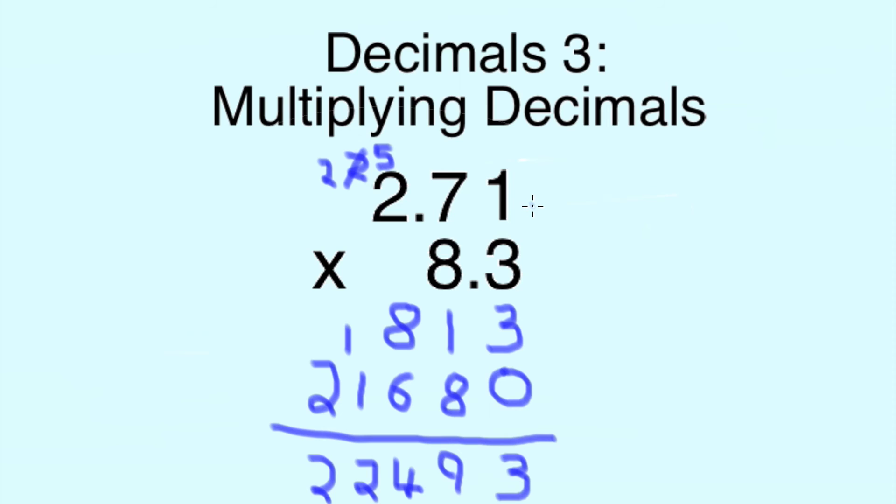But we need to work out where to put the decimals. So an easy way to do this is 1, 2 gaps for this starting at the end of the number. Same thing, starting at the end, 1 gap here. 2 and 1 makes 3.